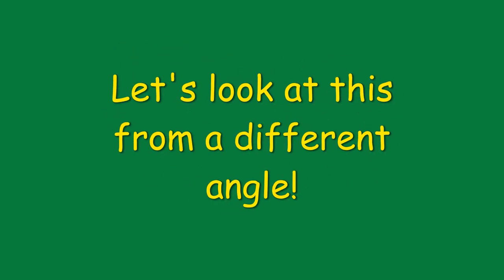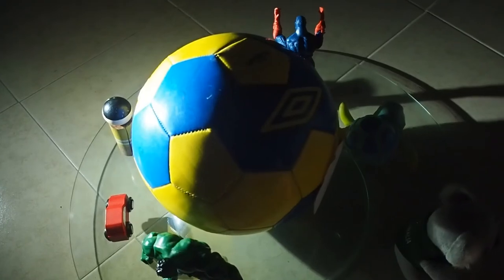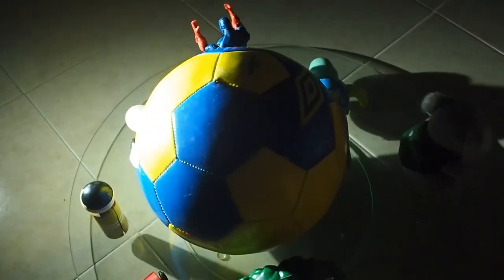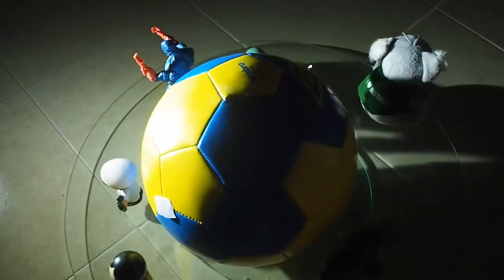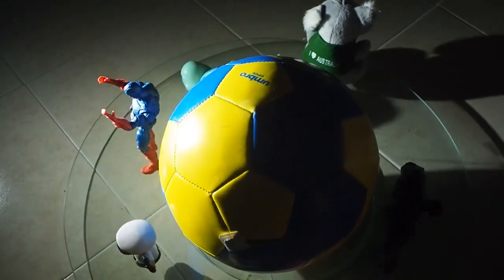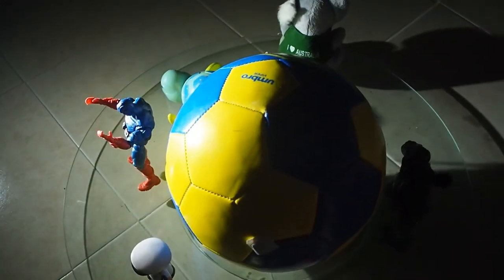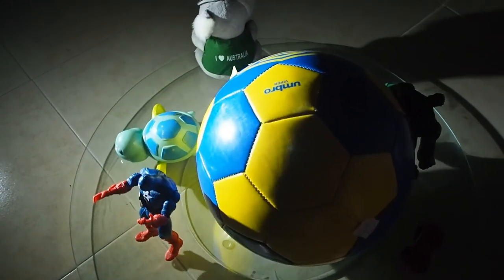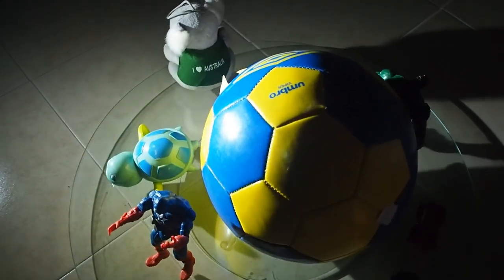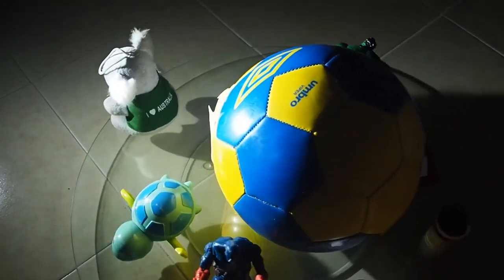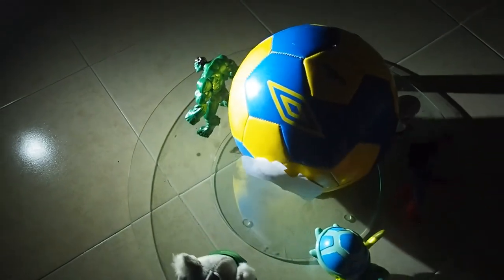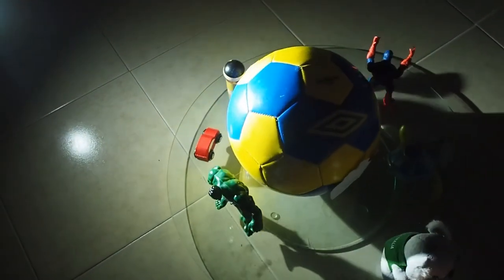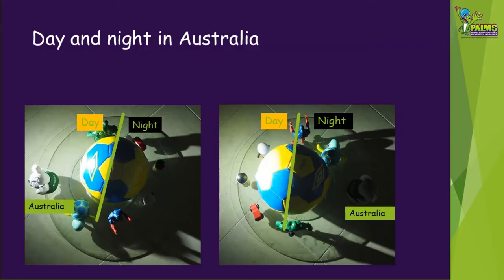Let's look at this from a different angle. Now we'll start with Australia in the dark where it's nighttime. Slowly it moves into the daytime and you can see Captain America representing America moving into the nighttime. Finally Australia moves back into where the sun can't reach it so it becomes nighttime again.